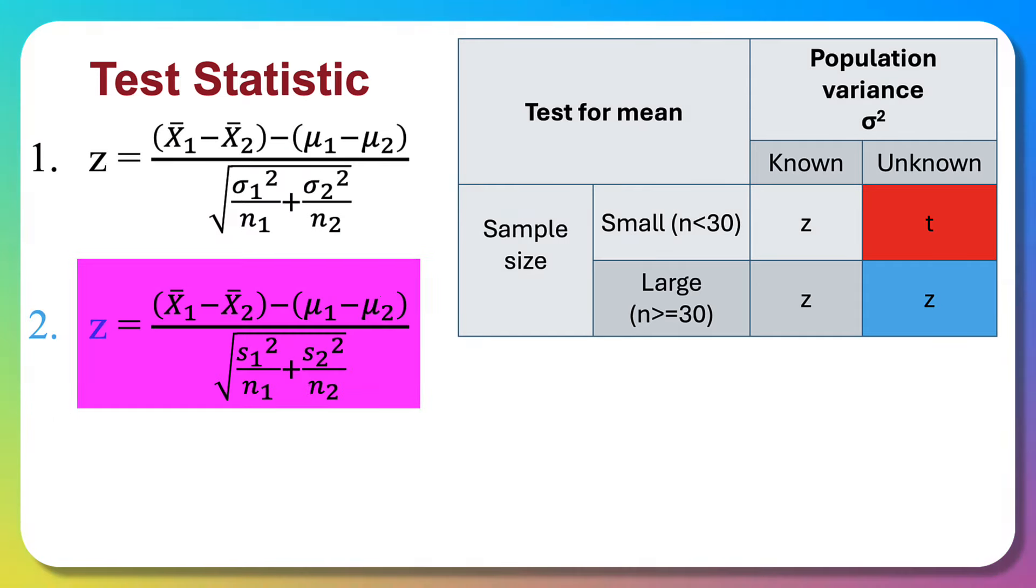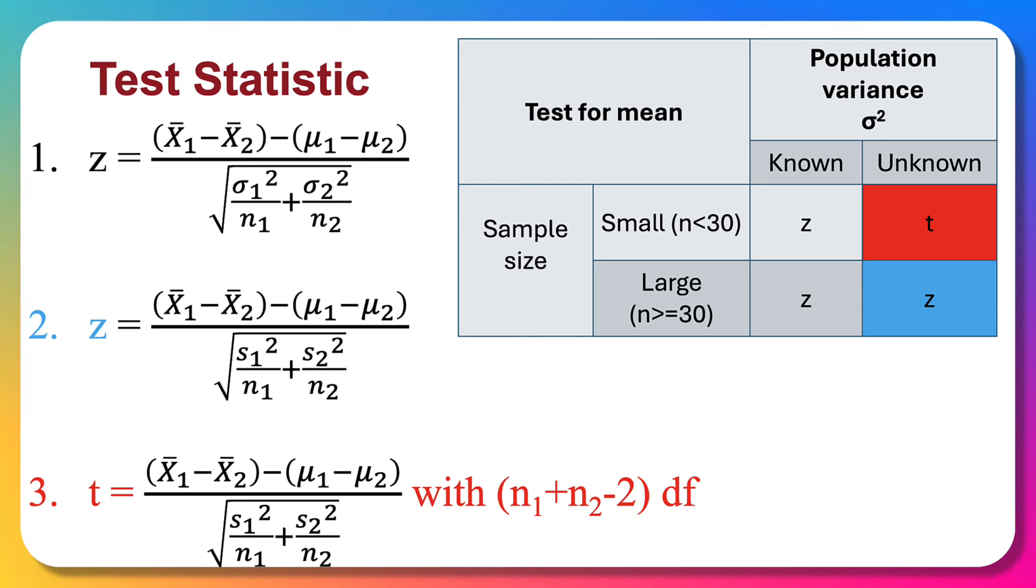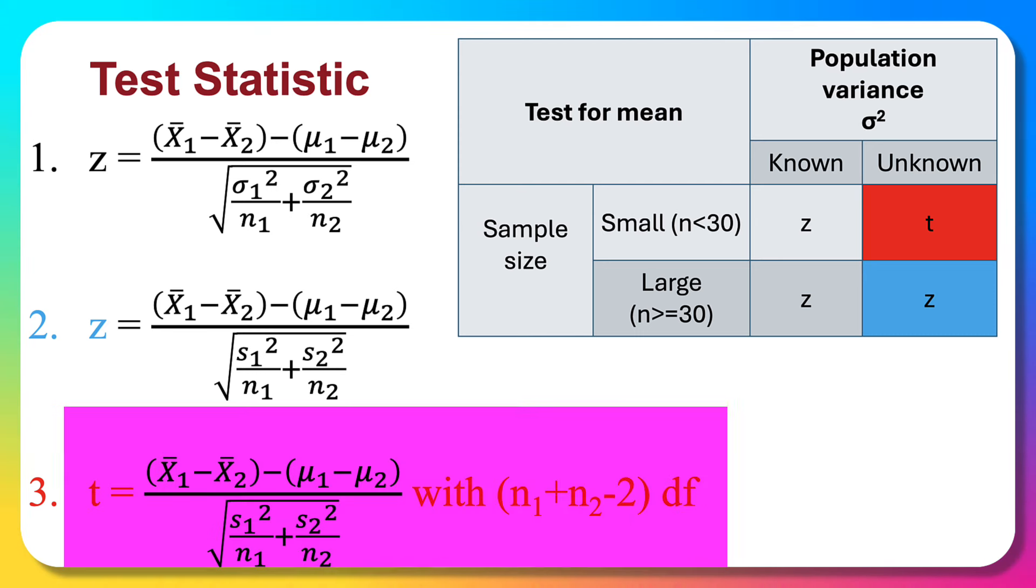The formulas are as follows: When population variance is known, we use the z-test formula. When population variance is unknown but sample variance is known and sample size is large, we use the z-test formula. When population variance is unknown and sample size is small, we use the t-test with n1 plus n2 minus 2 degrees of freedom.